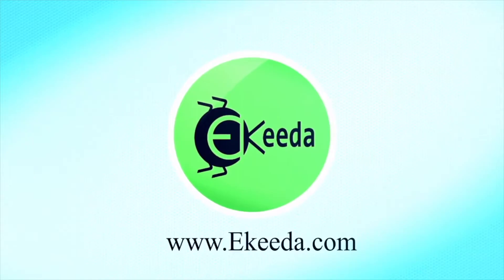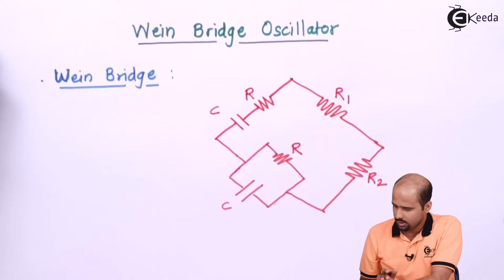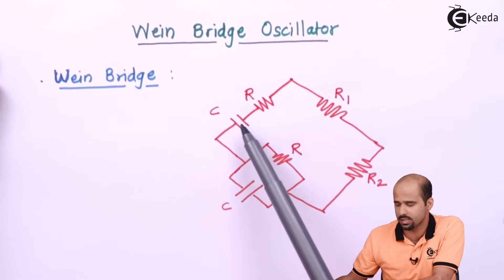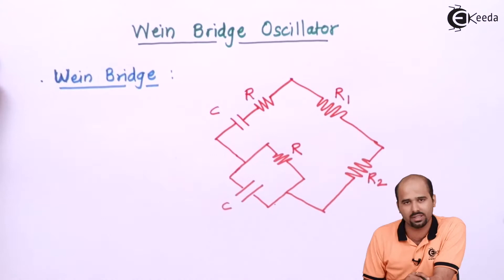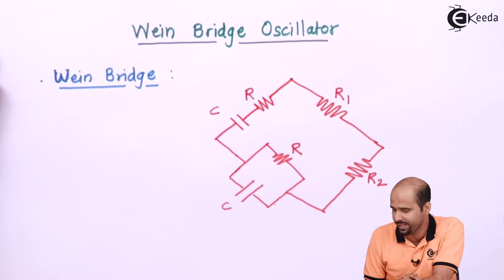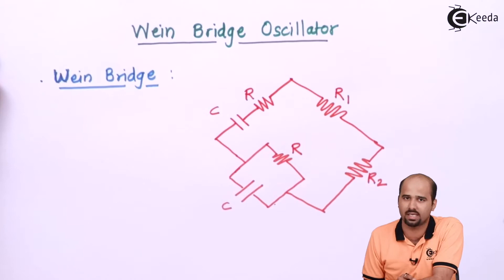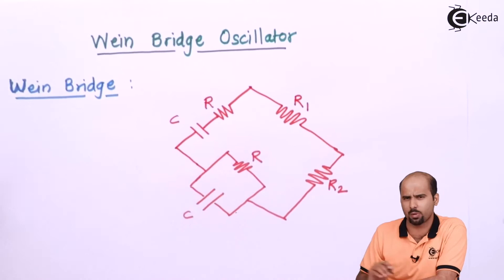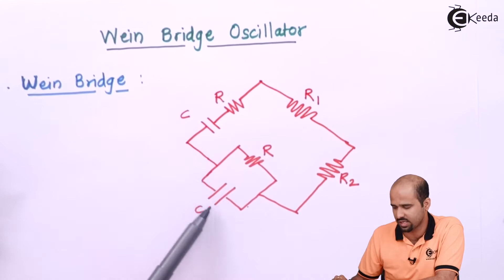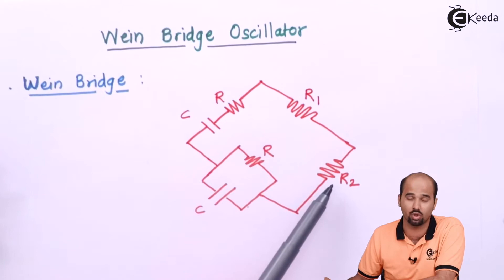Now look at this particular screen where we are getting RC in series and RC in parallel in both branches. R1 and R2 are only the resistances placed in the other two branches, which forms a bridge network. With this bridge network we will form the Wien bridge as an oscillator. Basically these two branches are responsible for getting the frequency of oscillation because capacitors are placed in these two branches only — these two resistors are not even under consideration for frequency.